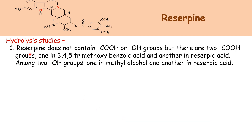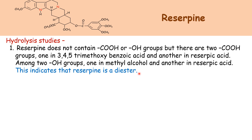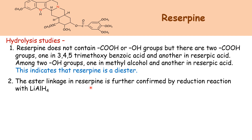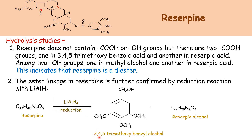Hydrolysis studies indicate that reserpine does not contain a COOH or OH group in its structure. But there are two COOH groups: one in 3,4,5-trimethoxybenzoic acid and another in reserpic acid. And among two hydroxy groups, one is in methyl alcohol and another is in reserpic acid. This reaction indicates that reserpine is a diester. The ester linkage in reserpine is further confirmed by reduction with lithium aluminium hydride, which gives 3,4,5-trimethoxybenzoic alcohol plus reserpic alcohol.